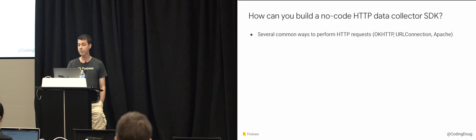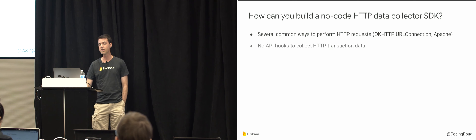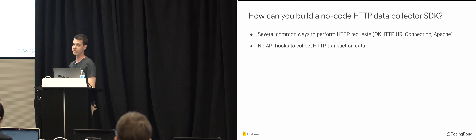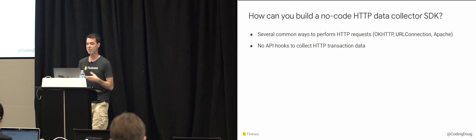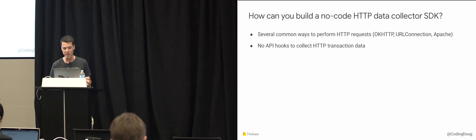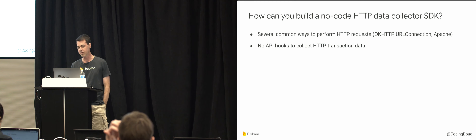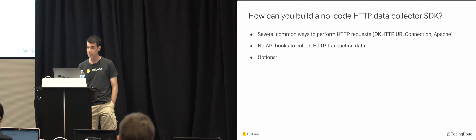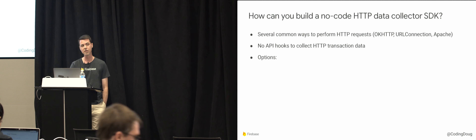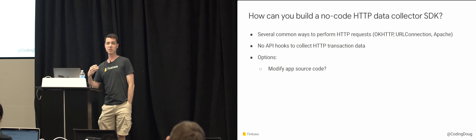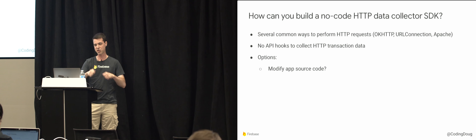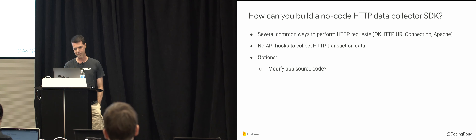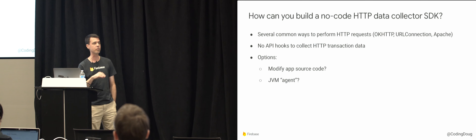There are no hooks to just collect HTTP information from these libraries — and in fact, that would be a security problem. There are three possible approaches. One: modify the app's source code, which is not a good idea. Two: use a JVM agent, which intercepts class loads — but Android doesn't run a JVM, it runs Dalvik or ART, so this feature doesn't exist there. Three: modify the bytecode of compiled JVM classes before you deploy your app.